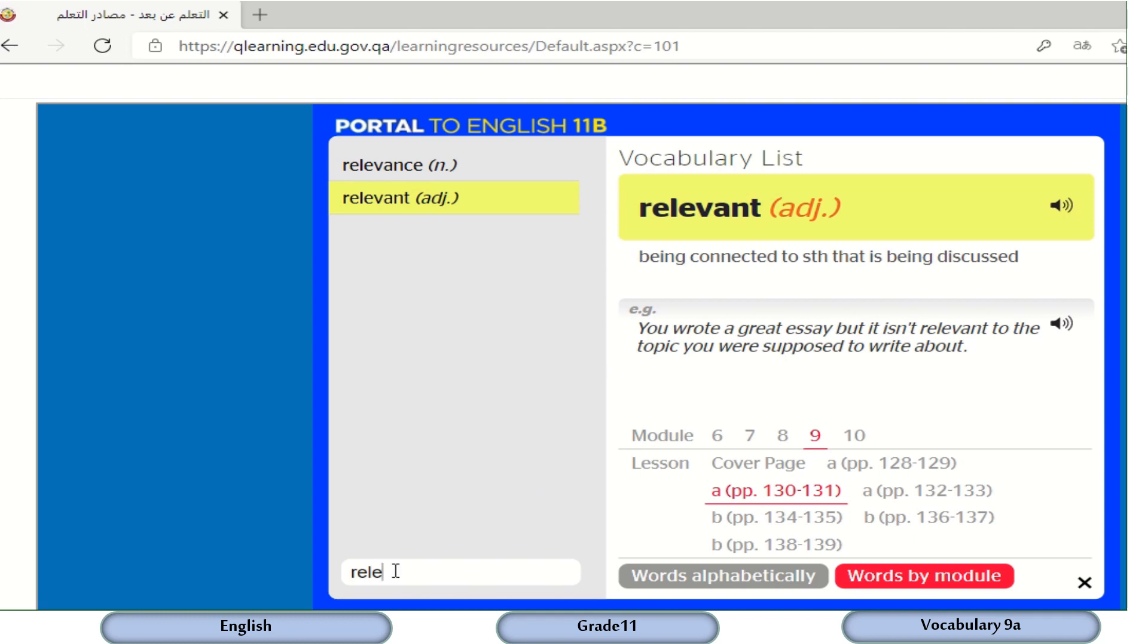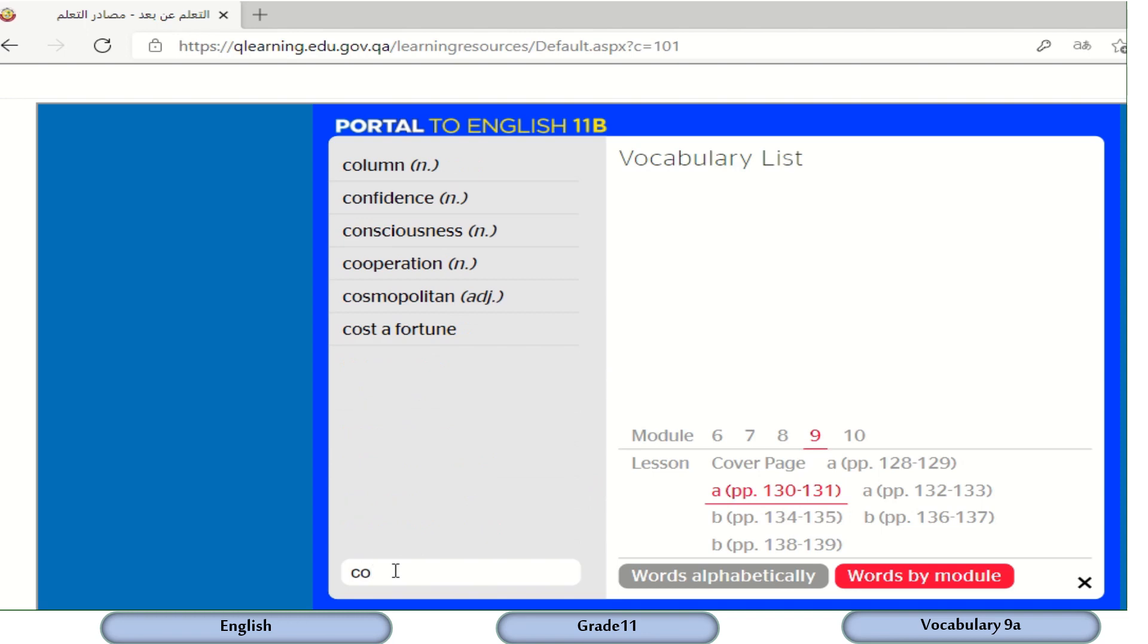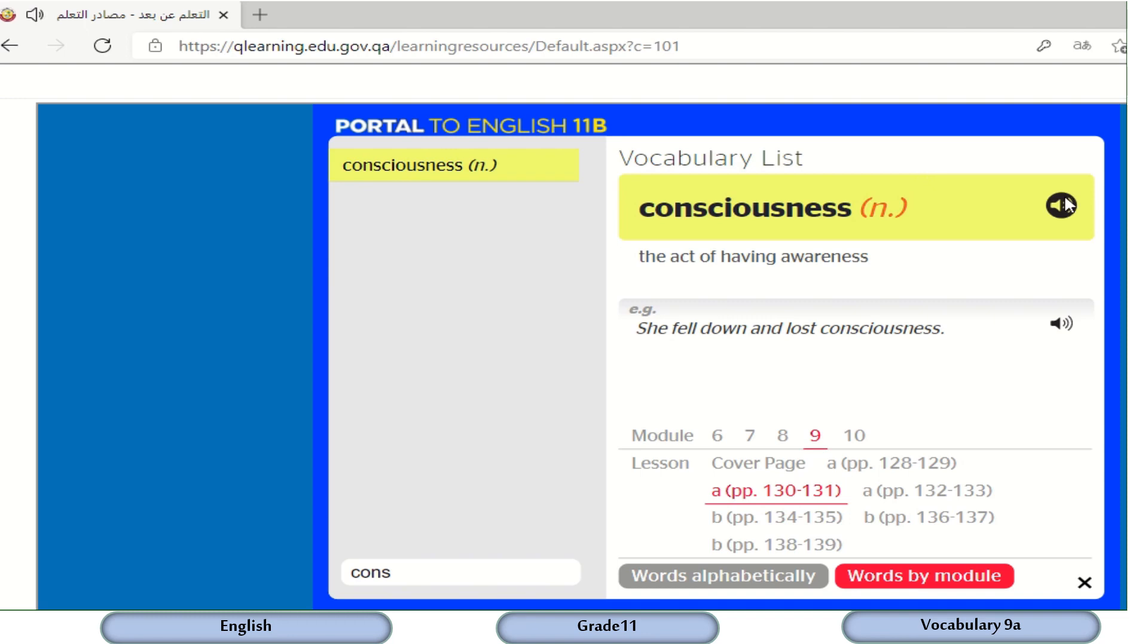Let's check more advanced words from the same exercise, which is exercise C. So here it is. Consciousness. Consciousness is the act of having awareness. How about this word? Consciousness. So we have both the noun and the adjective. Ignorant. Ignorant means not having enough knowledge about somebody or something. And of course, you can carry on searching the meanings of the words through this interactive book as it is available to all students.